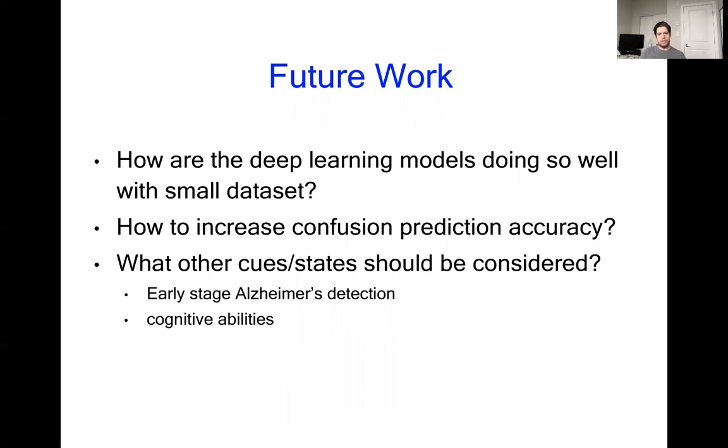The other thing we're looking at is how to increase confusion prediction accuracy by using tweaks to our architecture, such as dilated convolutions in the CNN. And finally, we're looking at what other cues and states should be considered. So we have ongoing work where we're using VSTNet to predict early stage Alzheimer's, as well as cognitive abilities such as visual literacy.